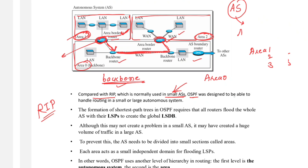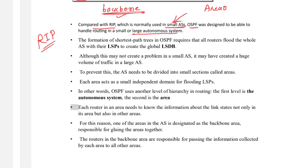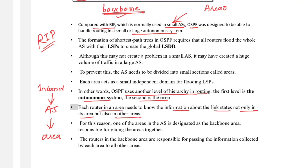OSPF was designed to handle routing in large autonomous systems, so it divides them into areas — adding another level of hierarchy. The hierarchy goes: internet → autonomous system → area. The backbone area (area 0) is responsible for gluing all areas together, and its routers pass link state information collected from each area to the others.